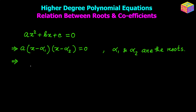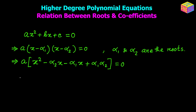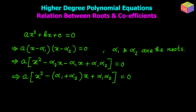Now if we multiply the factors we get something like this, and if we reorganize the terms and combine the x terms, then if we rewrite our original equation taking a as a common factor, we will have x squared plus b over a times x plus c over a equals zero. Now we are going to compare these two equations because they are the same equation.